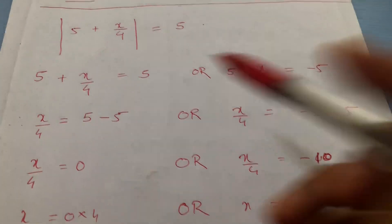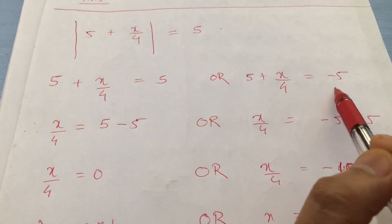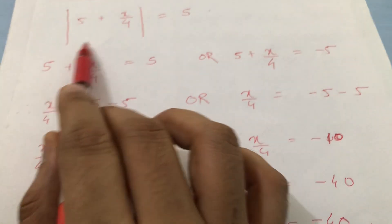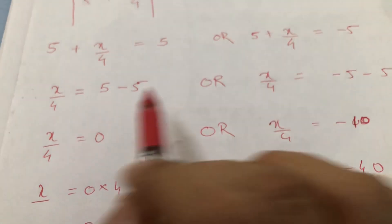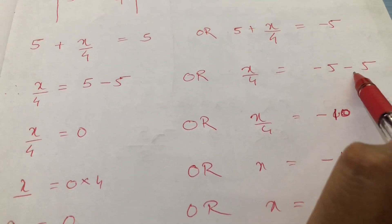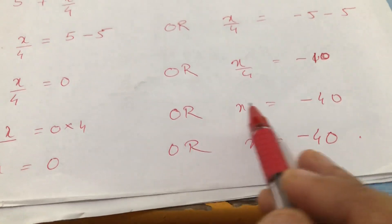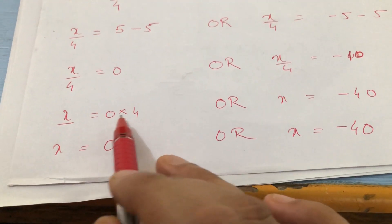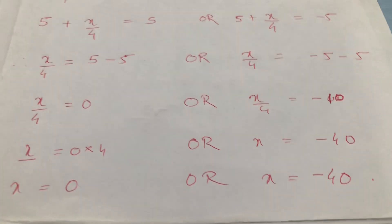The last problem: mod of (5 plus x) over 4 equals 5. When the mod sign goes away, (5 plus x) over 4 equals plus 5 or minus 5. Move the 5 over in each case: 5 minus 5 gives 0, and 5 minus 5 is minus 5 minus 5 gives minus 10. Multiply by 4: x equals 0 times 4, which is 0, or x equals minus 40. Thank you.